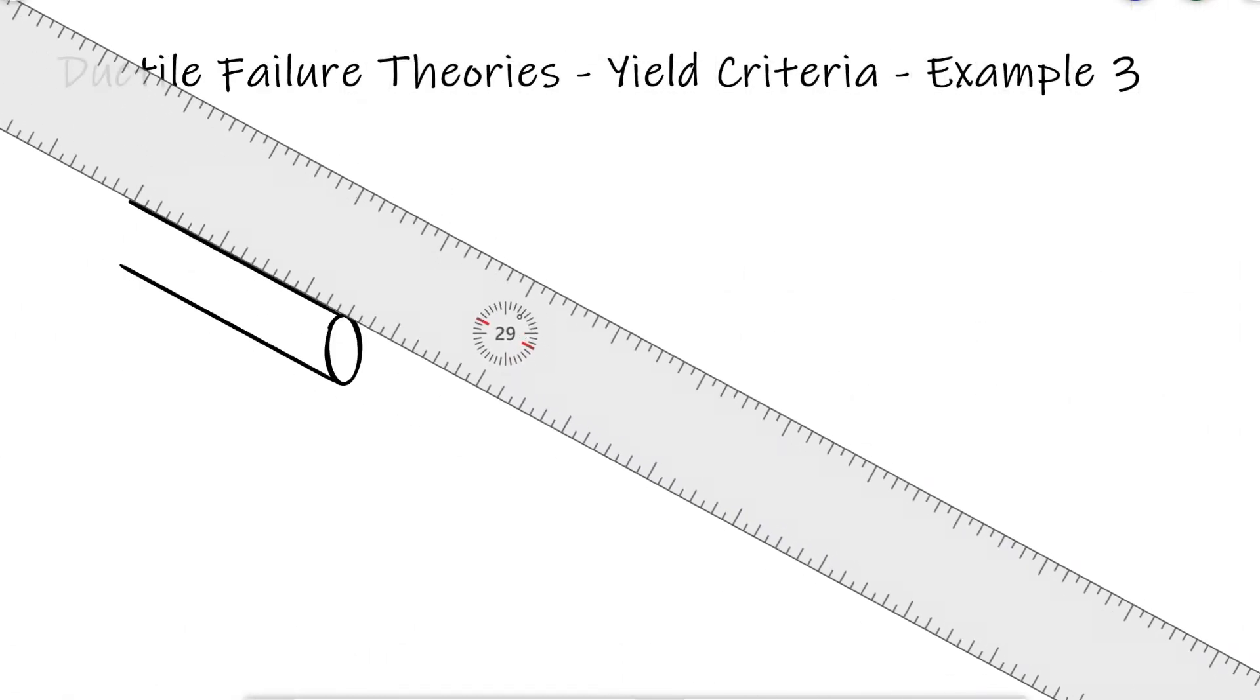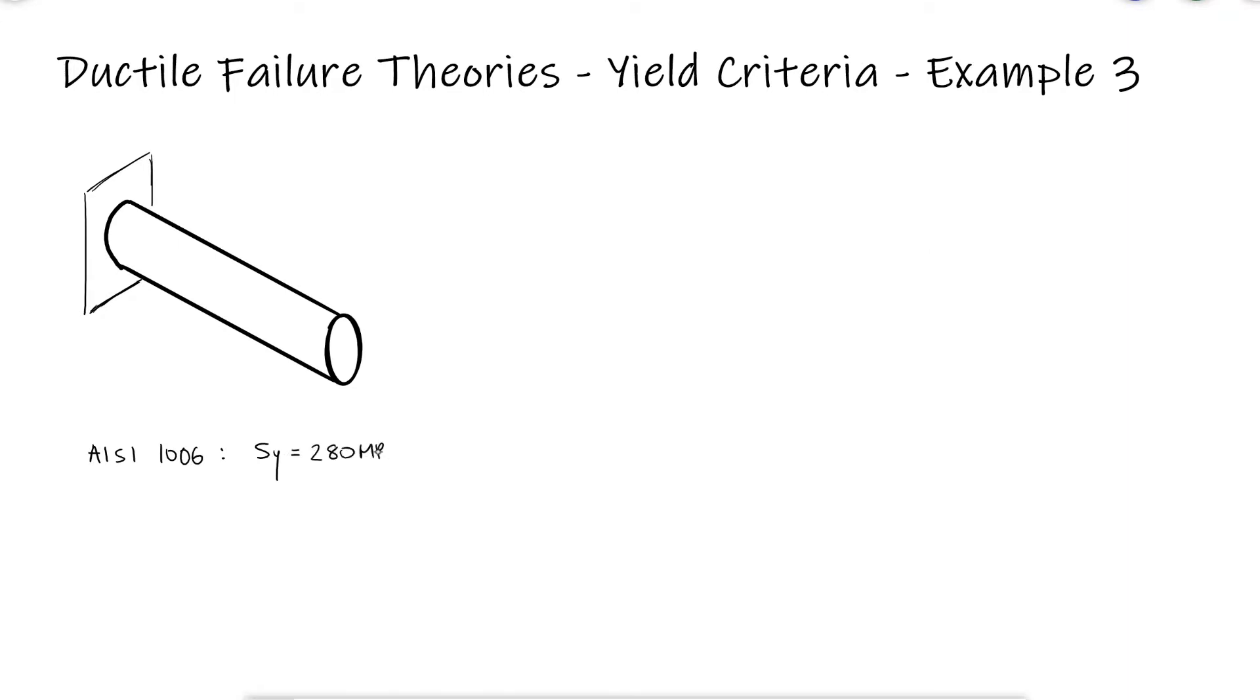The member shown is made of 1006 cold-drawn steel. Using the distortion energy theory, what is the factor of safety if the bar is subjected to two forces F and P and torque T?